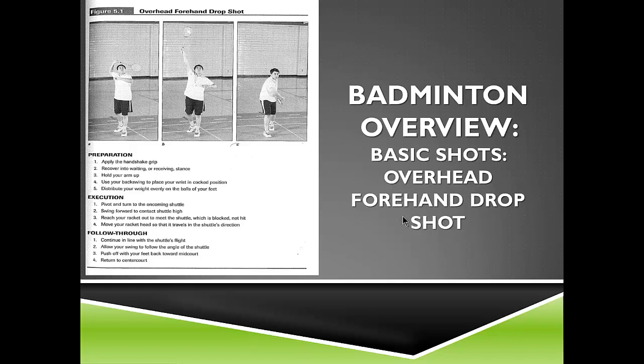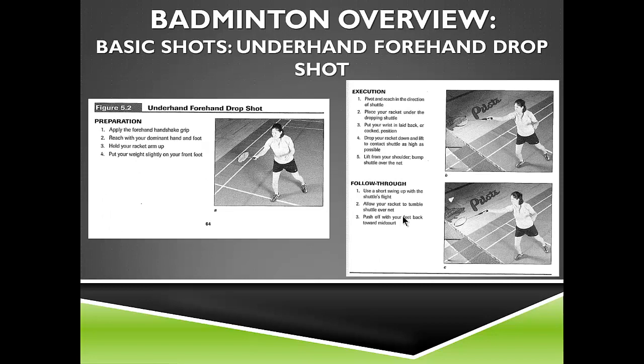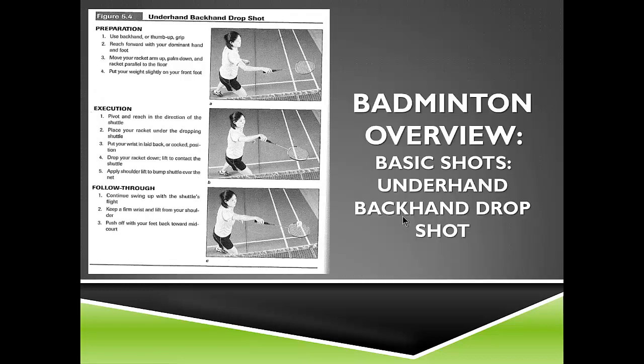The overhand forehand drop shot uses technique very similar to the overhead clear, but you drop the birdie just over the net with just a touch of the racket — an easy tap still following through across the body. The goal is to drop it just over the front of the net. The underhand drop shot is used at net play to drop the birdie just over the net. Use a same-side step with a small flick of the wrist. It can be hit straight or as a hairpin diagonally down the net. The backhand drop shot is similar to the backhand clear, but you simply tip the birdie over the net.